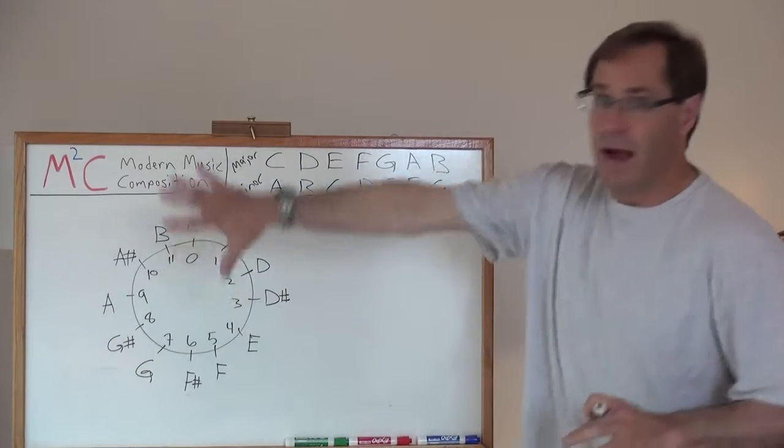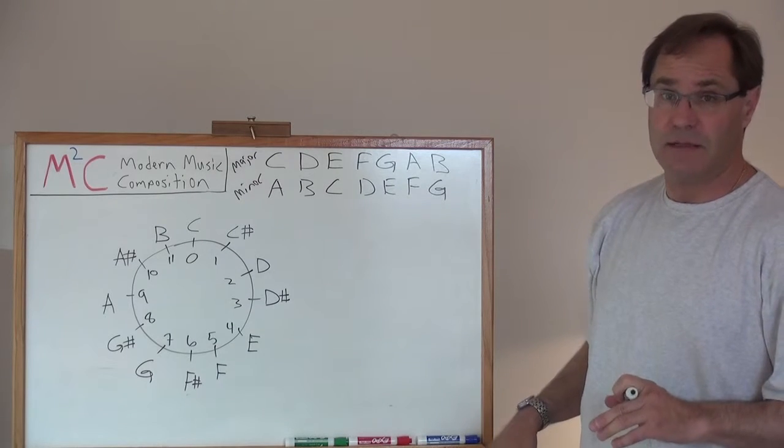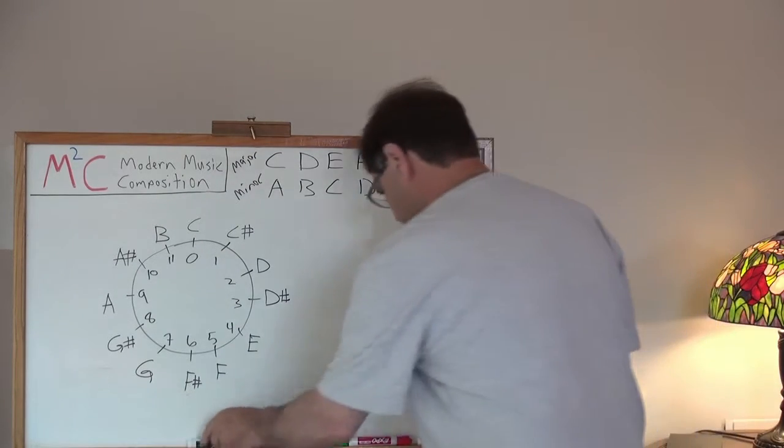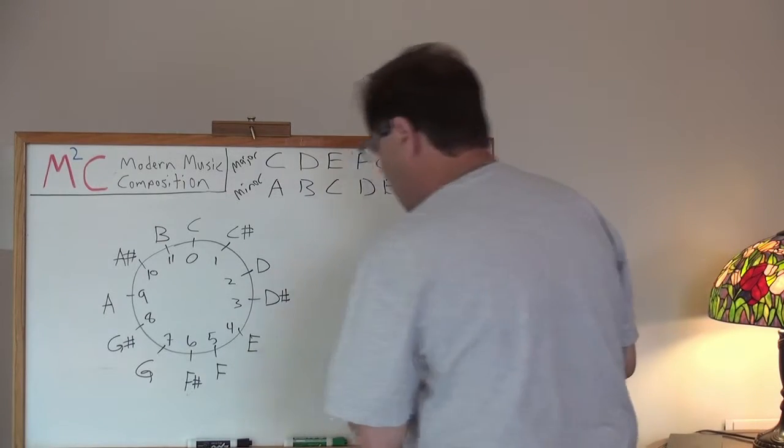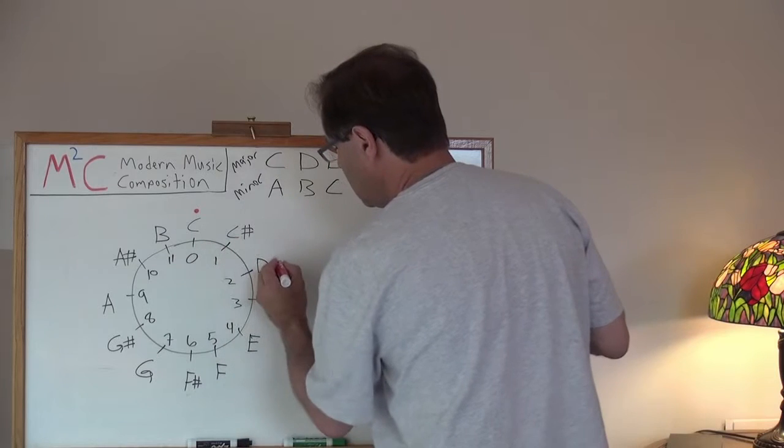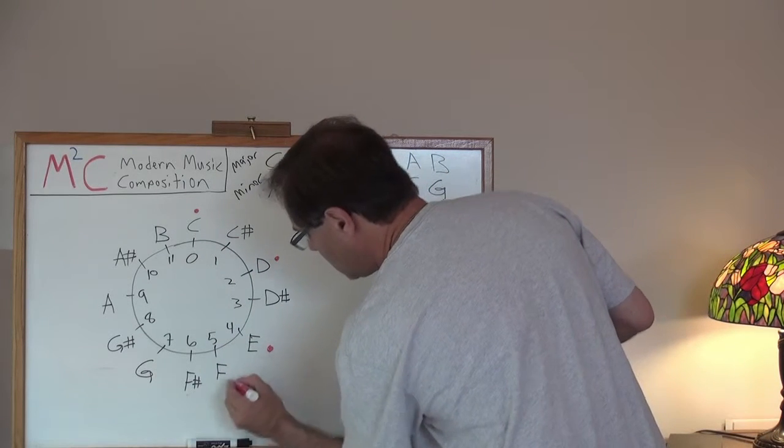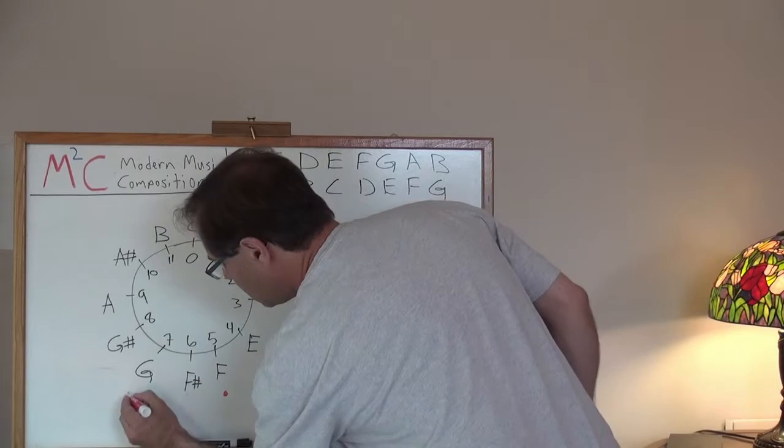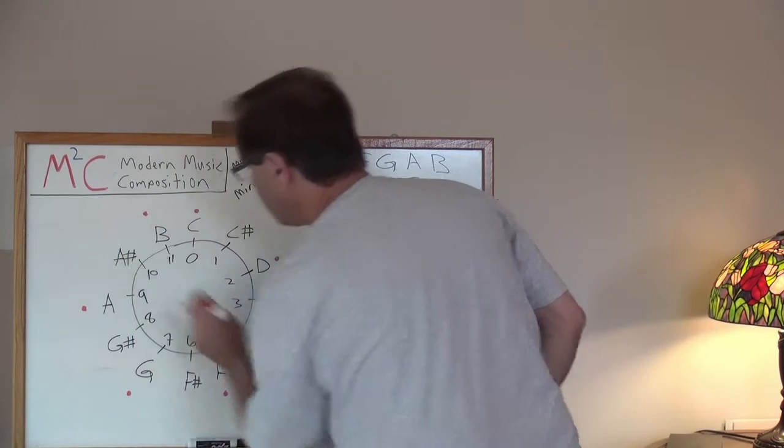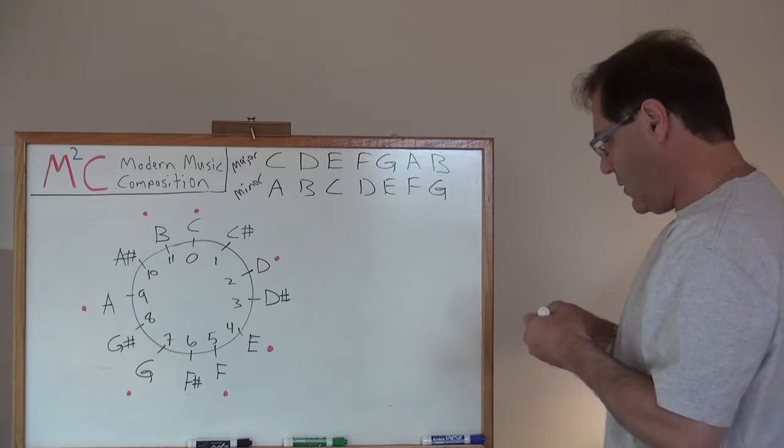From here let's pull out the major diatonic scale and I'm going to just label that with a red dot because we're going to be doing a couple different scales here. So we've got C, D, E, F, G, A, and B.